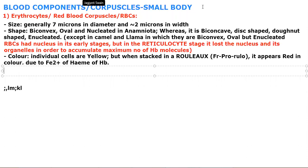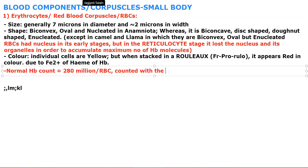If you keep RBCs one on another, it just resembles a granite. Normal hemoglobin count is equal to 280 million per RBC. So the normal count is 280 million, and the hemoglobin percentage is counted with the RBC.